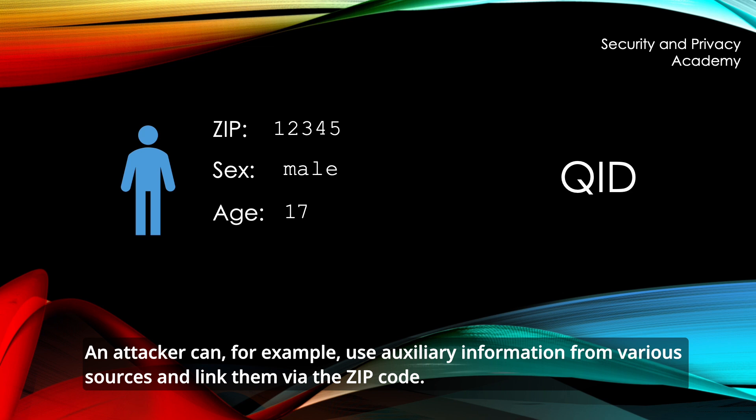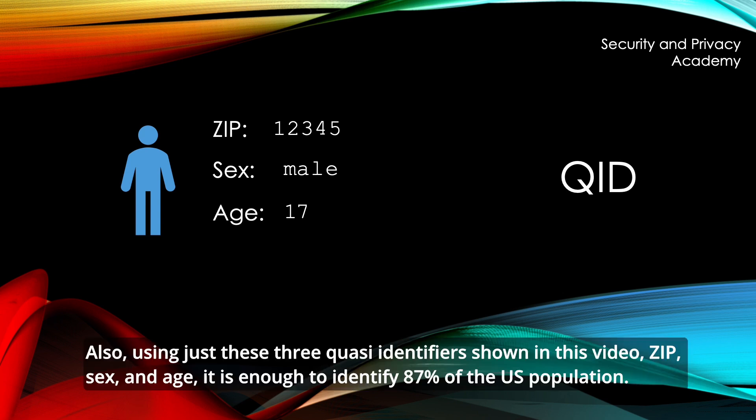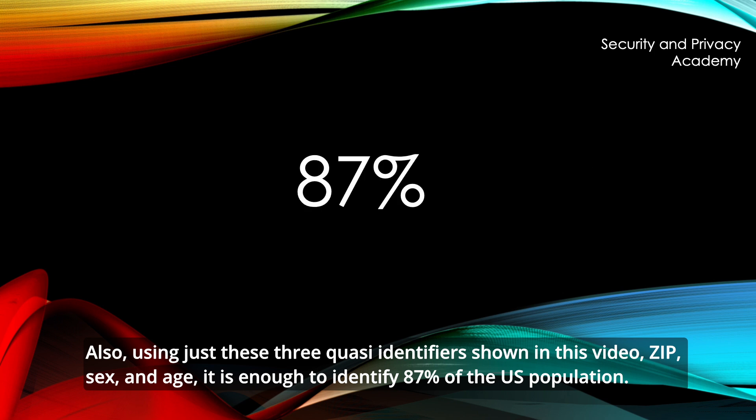An attacker can, for example, use auxiliary information from various sources and link them via the zip code. Also, using just these three quasi-identifiers shown in this video — zip, sex and age — it's enough to identify 87% of the US population.